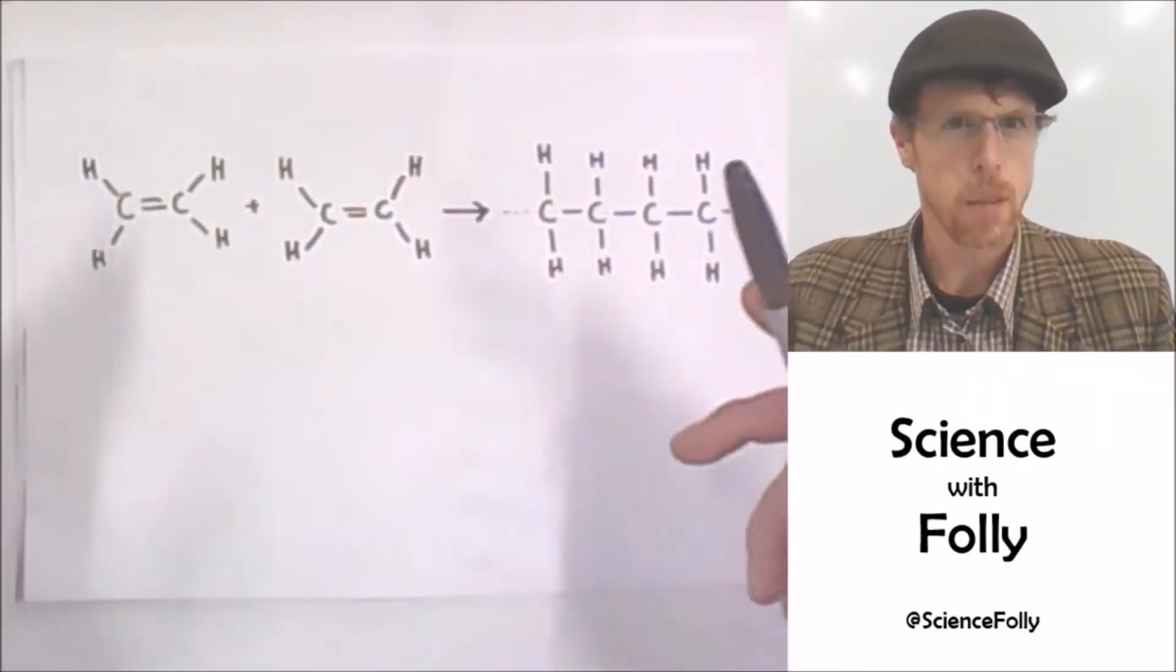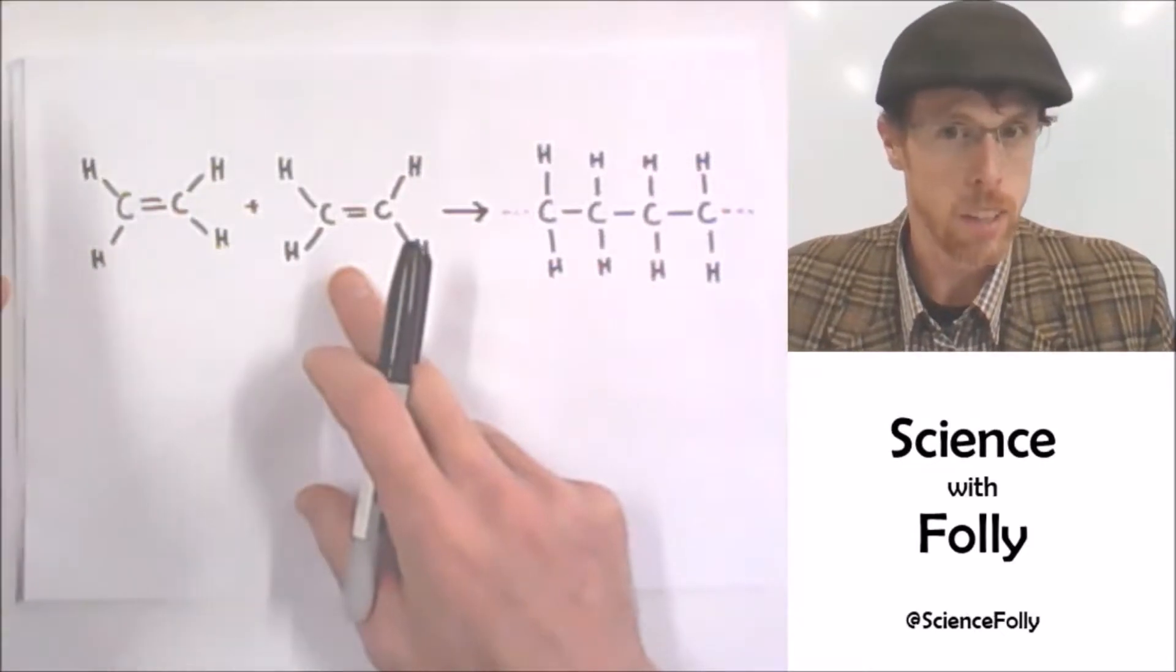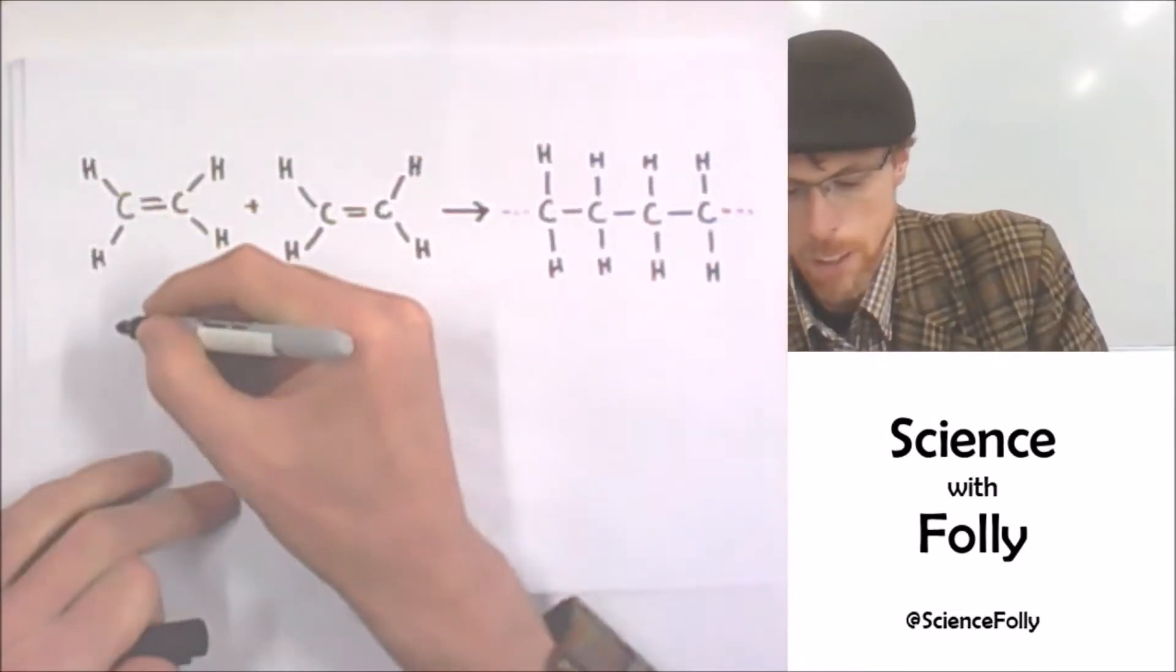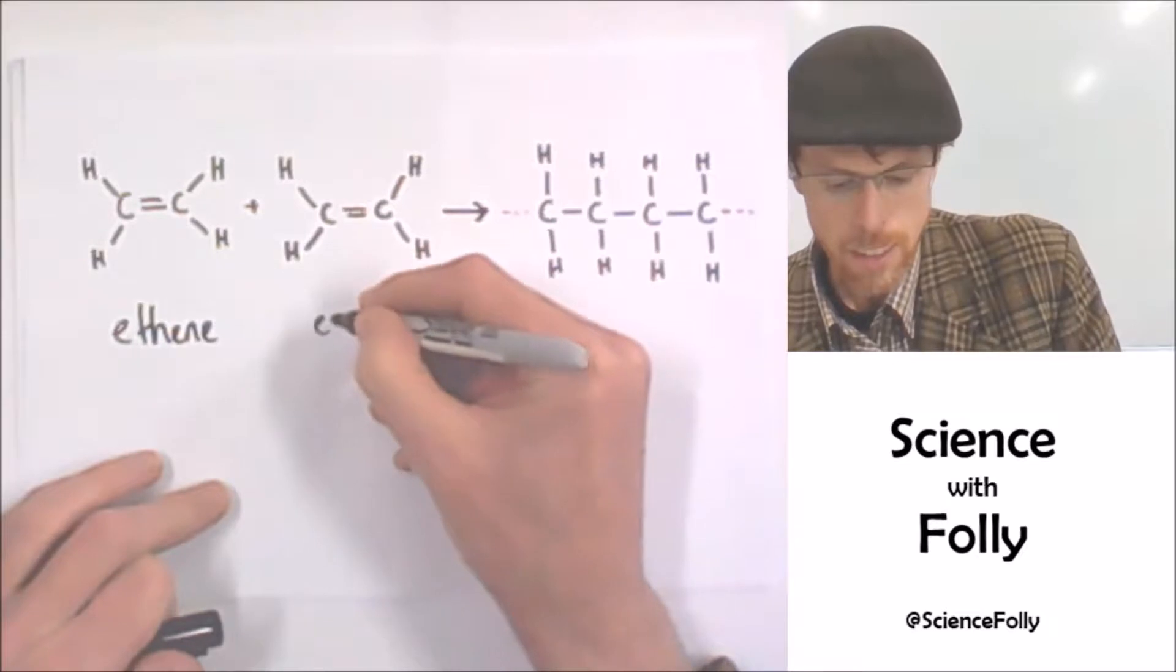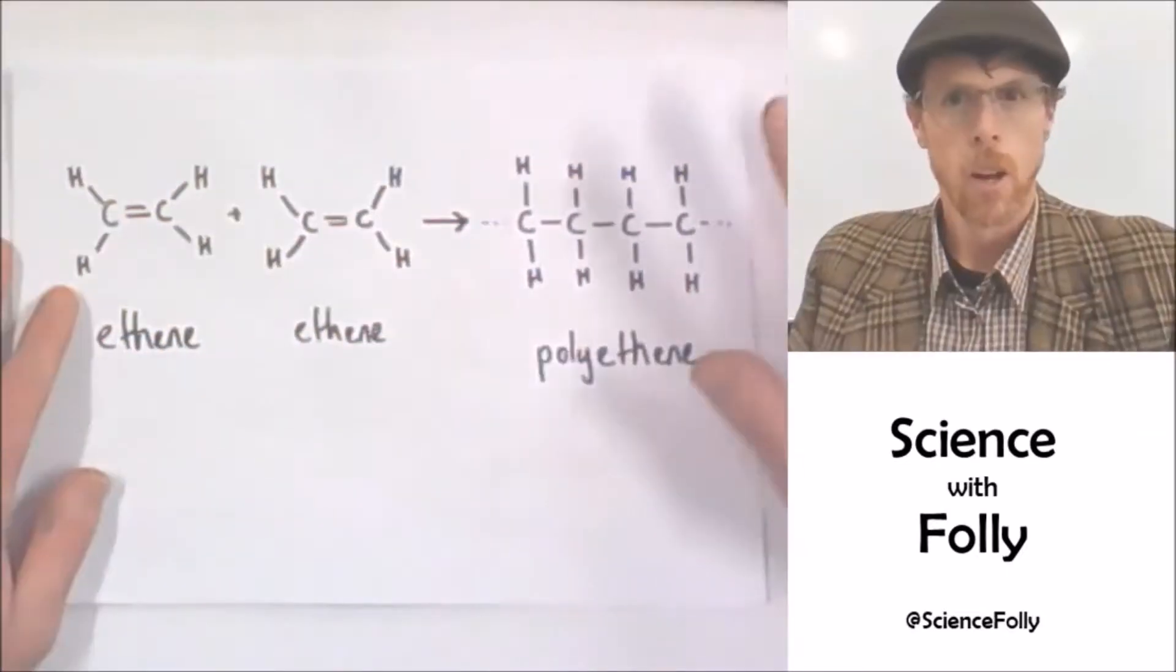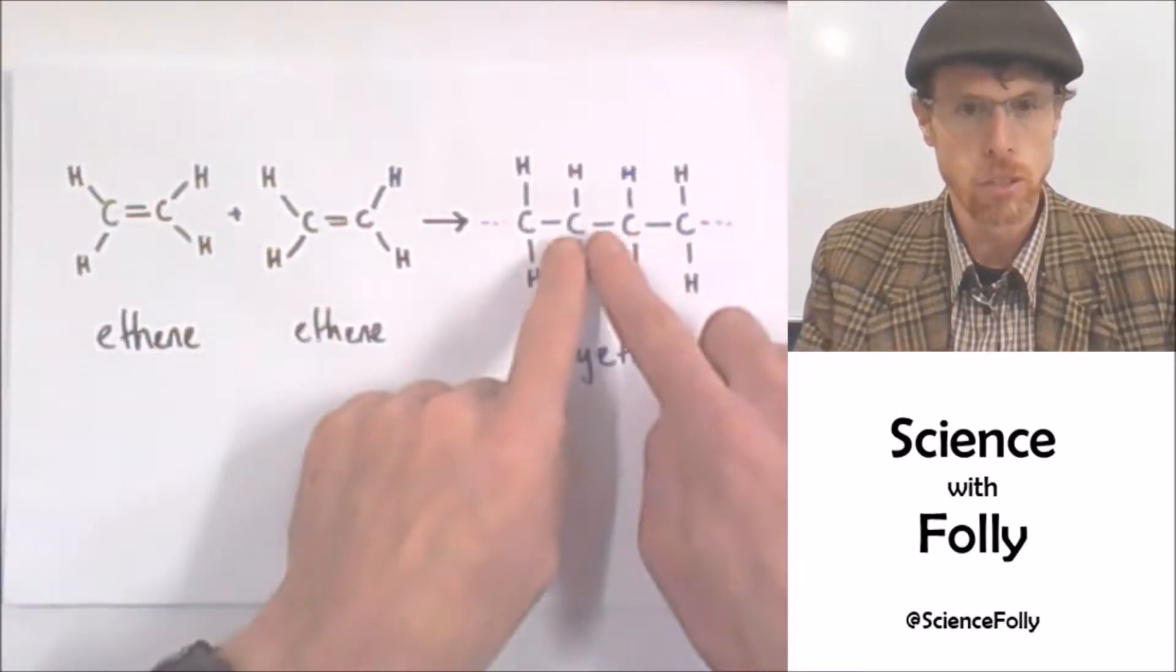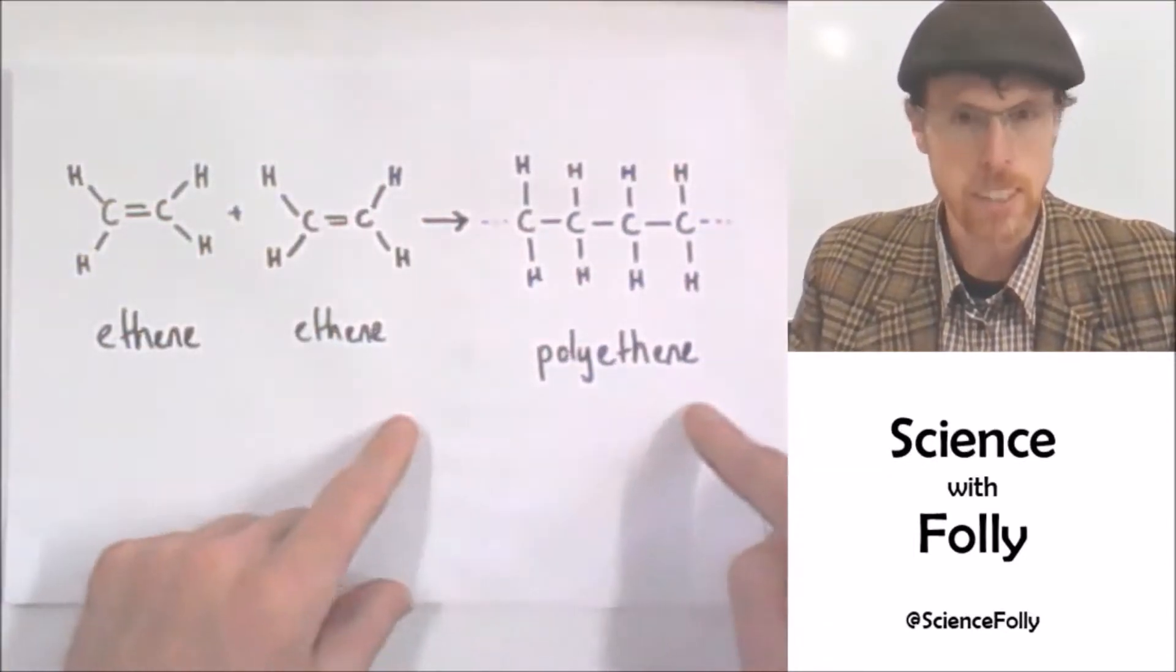So here is the simplest example of polymerization. Here we've got two, although it would have a whole lot of them, two individual monomers. What are the names of these molecules? I think you've got it. Ethene and ethene. And obviously there would be lots of them. When they react together with some heat and a catalyst, the double bonds are broken and all the molecules join up to form this polymer called polyethene.